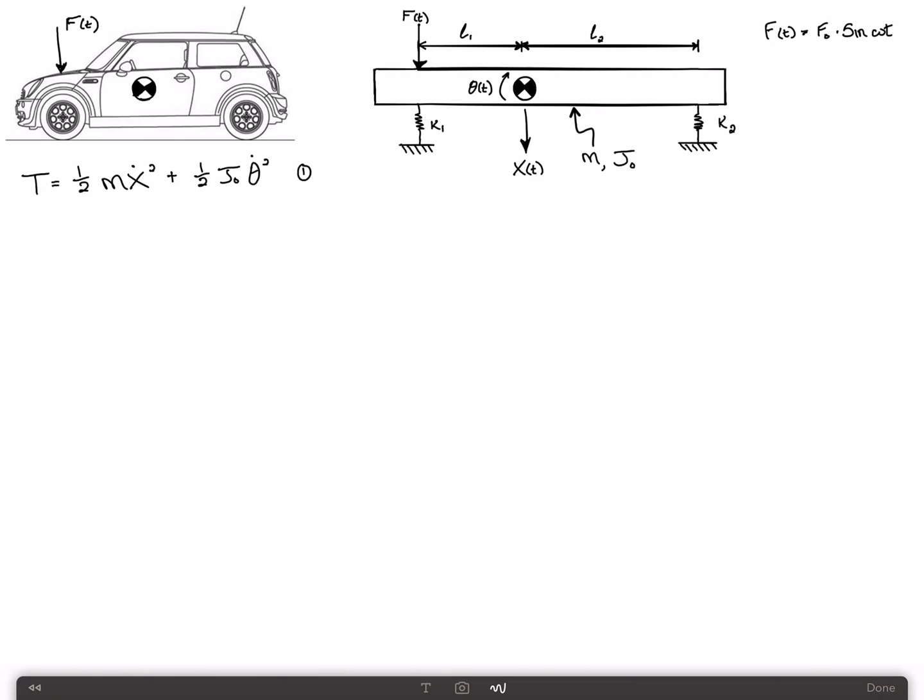Now the potential energy can be written as one-half times K1 times the displacement of K1. Well, the displacement of K1 can be written as X minus L1 theta quantity squared. And why is it minus? Because the displacement X and the displacement due to theta are in opposite directions. And now the effect of K2 is just one-half K2 times X, in this case, it's plus L2 theta quantity squared.